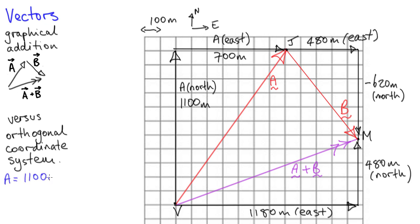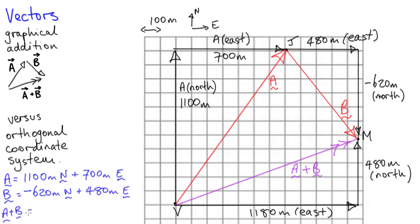The really great thing about turning all our vectors into sums of two parts that run along the same grid lines is that we just have to add the north-south numbers and then the east-west numbers — there's no tricky drawing or measuring lines and angles. Just to check: the north part of A plus the north part of B really does equal the north part of A plus B: 1100 minus 620 is 480. And the same works for the east components of the vectors.